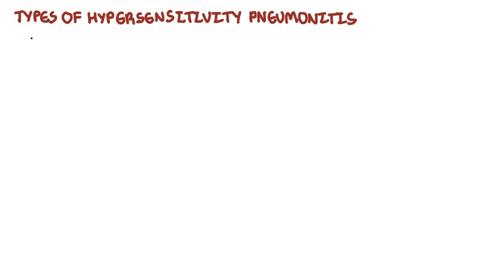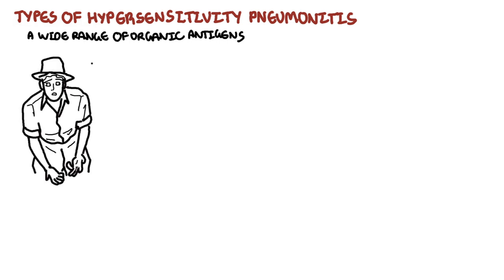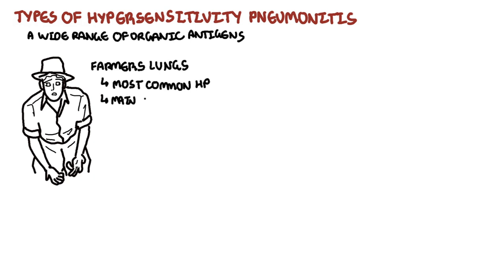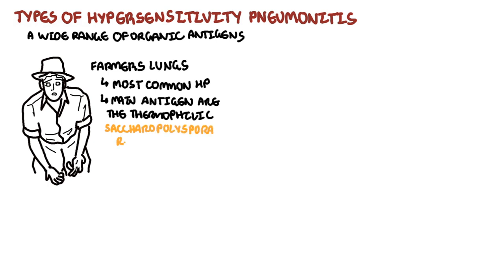Really, anything can cause hypersensitivity pneumonitis — the body simply reacts to that particular allergen or antigen. Some of these antigens are commonly found in agricultural areas, resulting in something called farmer's lung. Farmer's lung is the most common cause of hypersensitivity pneumonitis, and the main source of antigens is the proliferation of thermophilic actinomyces, which is found in hay or dust.